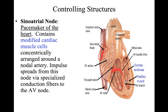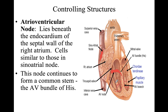In the interventricular septum, the bundle of His courses ventrally then reverses direction, branching into right and left bundles. From anatomy, we recall the septomarginal trabecula, which works as a shortcut to transmit impulses from the septum toward the wall to ensure fast and synchronized contraction. The AV node is found in the endocardium of the septal wall.